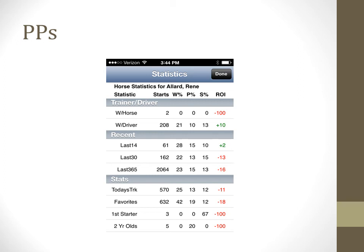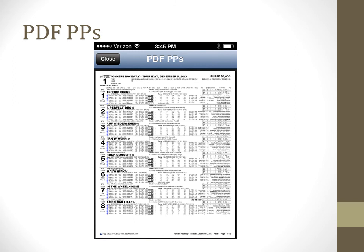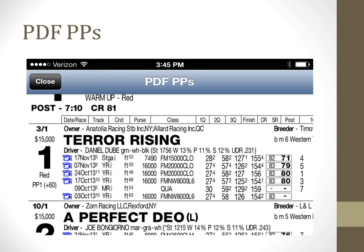You can also access this same data while on the home tab. The PDF PPs tab provides the condensed past performances in a PDF format. You can use your fingers to enlarge the view and make the past performances more readable. You can then use your finger to move the PDF page around to view the different parts of the running lines. Turning the Pocket Handicapper sideways on your mobile device to view in landscape mode lets you view more information on the screen.